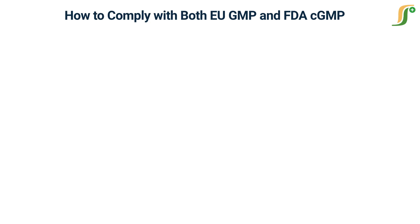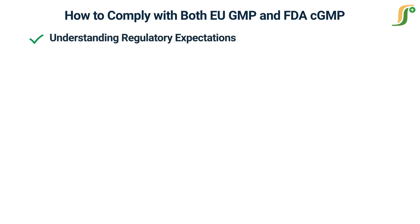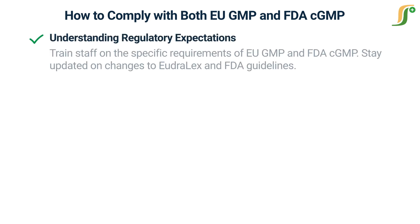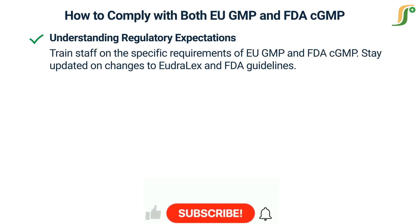To operate in both EU and US markets, pharmaceutical companies need to harmonize their practices to meet the requirements of both regulatory systems. Key strategies include understanding regulatory expectations: training staff on the specific requirements of EU GMP and FDA CGMP, and staying updated on changes to EudraLex and FDA guidelines.